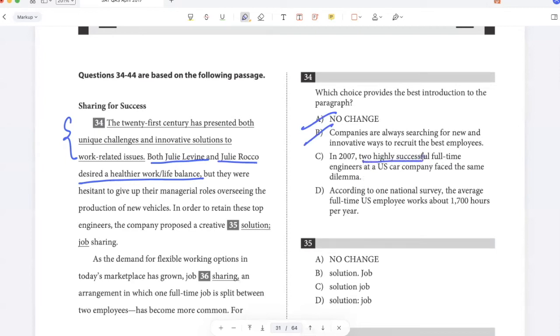In 2007, two highly successful full-time engineers at a US car company faced the same dilemma. So this is a good introduction, right? Because when I say two highly successful engineers face the same dilemma, and then I talk about Julie Levine and Julie Rocco, then they are the two engineers. So this should be my answer.